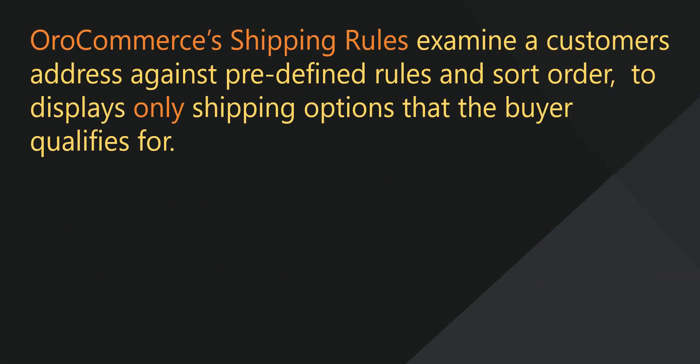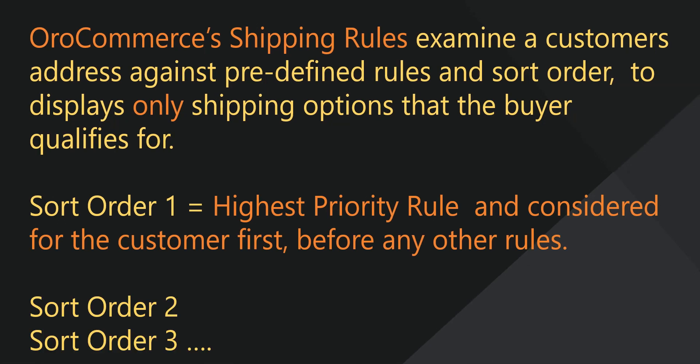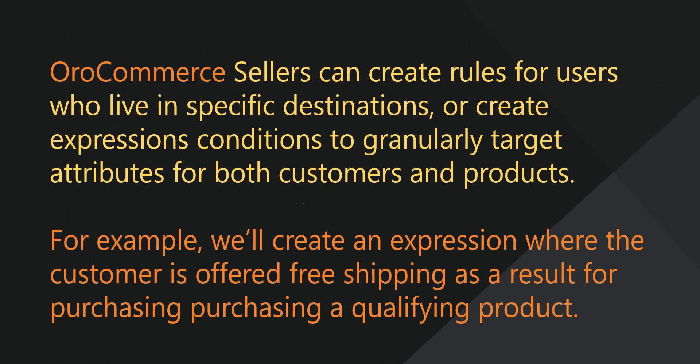OroCommerce's shipping rule examines a customer's address against a list of shipping rules, taking sort order into consideration, and then displaying only the shipping options that the customer qualifies for. The sort order of one is the highest priority rule. OroCommerce works through this rule and then processes the lower priority rules, returning and displaying all the shipping options to the customer that they qualify for. Sellers can also create shipping rules for particular destinations and add expressions to granularly target attributes of both customers and products.